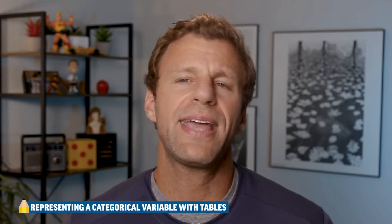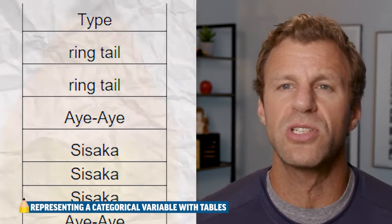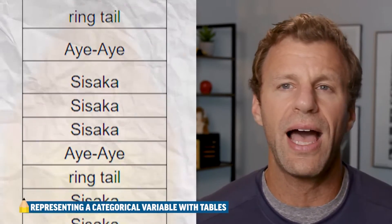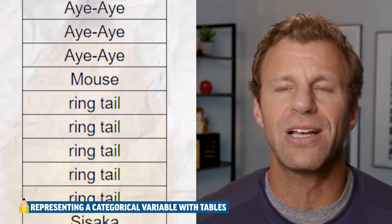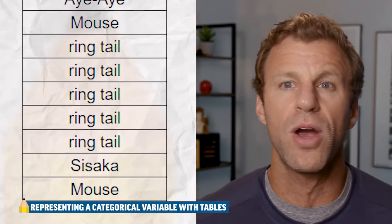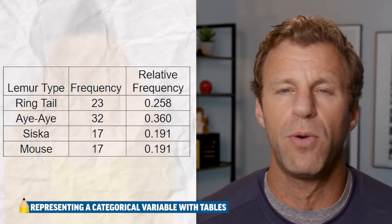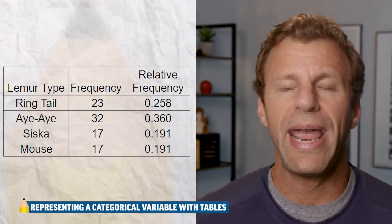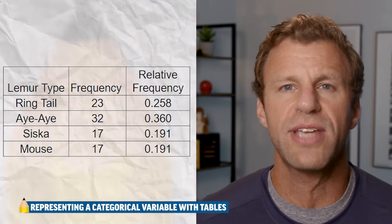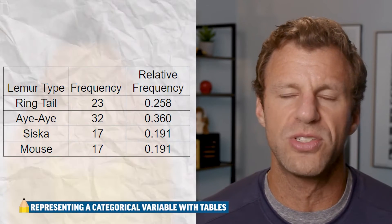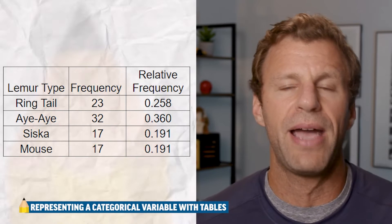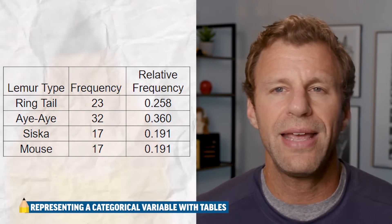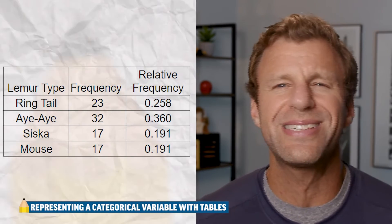Let's start with categorical data because it really is shorter and much faster to talk about. Let's say we take a sample of 89 lemurs, and one of the variables we want to analyze is the type of lemur — whether it's a sifaka, an aye-aye, a ringtail, or a mouse lemur. Those are all words, which makes this a categorical variable. If we just have all that data collected, it's probably going to be a really long, boring list. So the first thing we'd like to do is organize it into what we call a frequency table. Frequency is just a fancy word for counts — we list each of the categories and simply count how many of the lemurs fit into each category. We could also look at the relative frequency, which is the proportion of lemurs that fell into each category. For example, we take the number of ringtail lemurs and divide by 89 to get the proportion.